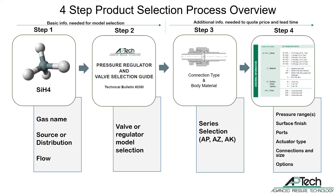Step one is to get basic application information. To get a general model selected, you must have the gas name, location in the gas system, and the maximum flow rate. Maximum pressure or pressures should be known to make sure that the pressures are within the range of the selection guide. In some cases, the pressures can be higher or lower than the assumptions used in the guide.